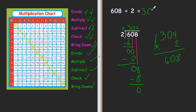So 608 divided by 2 is 304. All right. Solve the next problem. Try it on your own and then use a check.